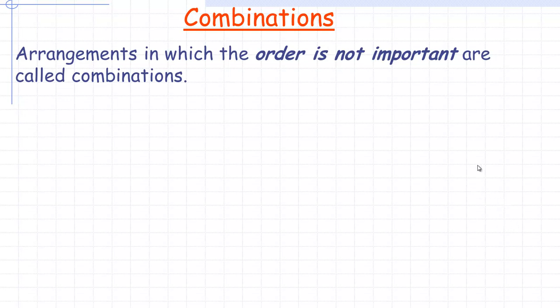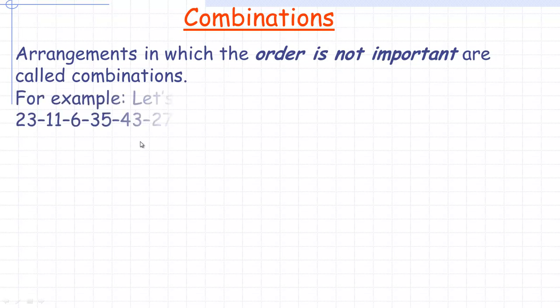In this tutorial, we'll take a look at the concept of a combination. An arrangement in which the order is not important is called a combination. If you have the same objects and you switch the order around, like the letters A, B, and C — if you switch them around and say B, C, A, it's still the same combination. Switching the order does not make a different combination. It makes a different permutation, but it would be the same combination.